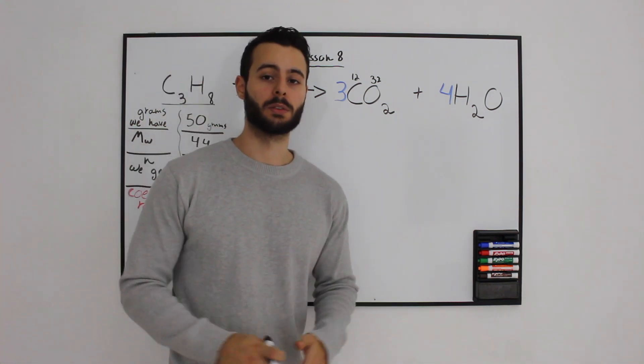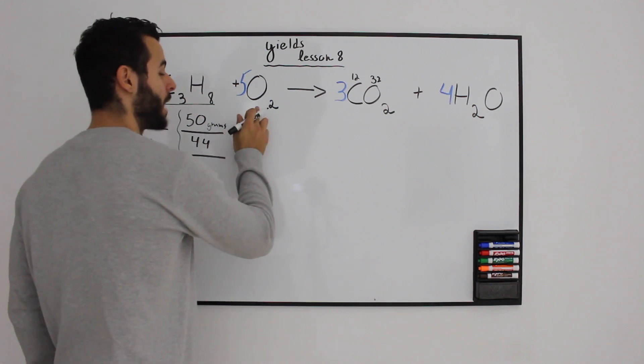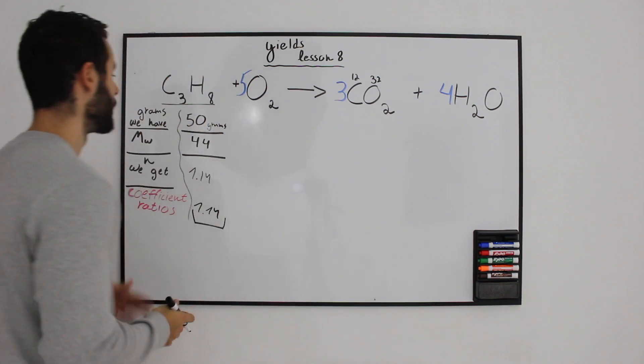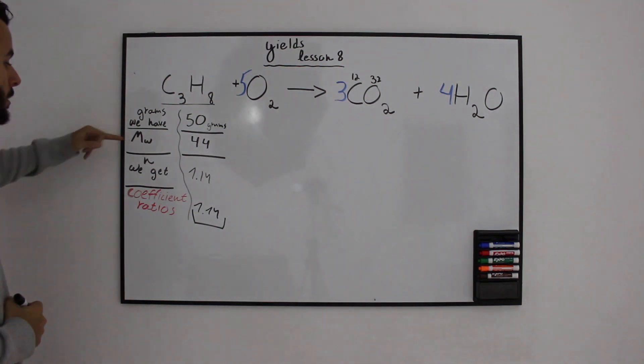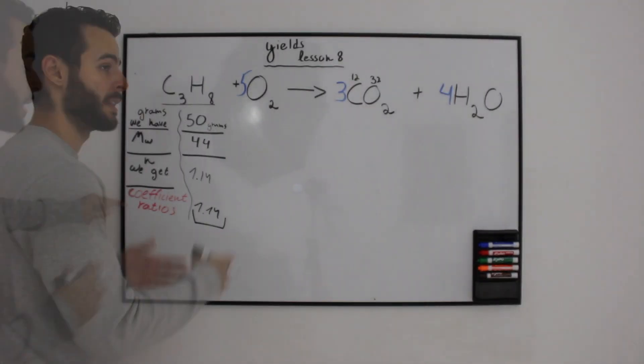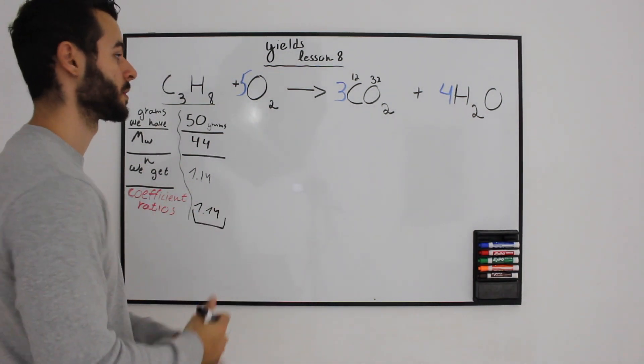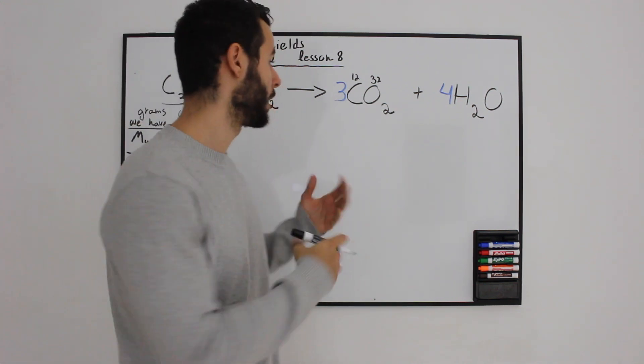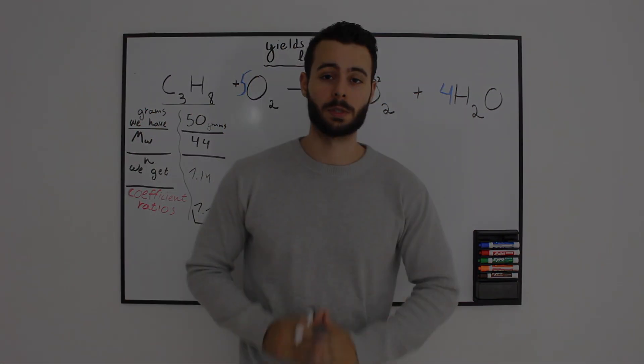Everything we talked about was based on having unlimited oxygen reacting with propane. You'll use this table: grams, molecular weight, moles, and coefficient ratios. Using this table, you'll see how easy it is to solve stoichiometric problems. Make sure to follow me on the next video about calculating with a limiting reactant.